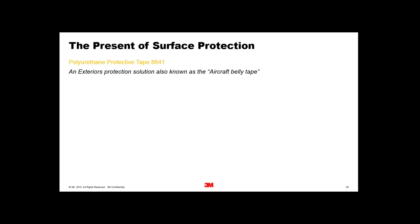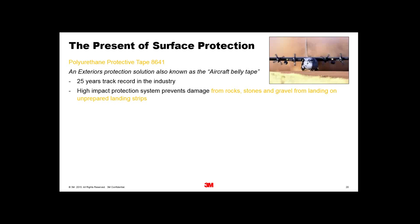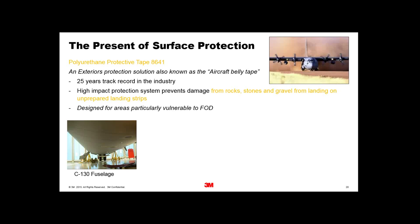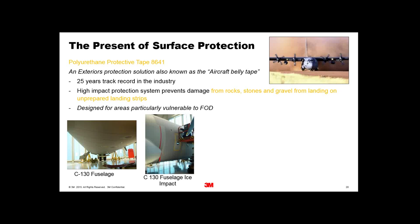We have a product called 8641, sometimes known as belly tape, designed for aircraft that land on unmade strips. You can see a C-130 landing and kicking up a huge amount of debris. It's there to protect not just from fine sand, but from larger FOD — stones, boulders — that get kicked up from the undercarriage and can damage the belly panels. The whole underside of the C-130, for aircraft operating in those environments, is covered with a specific tape. It's also used on fuselage areas where ice flung off propellers can cause damage, and on the inboard flap of the 737 to protect from gravel kicked up from the runway.